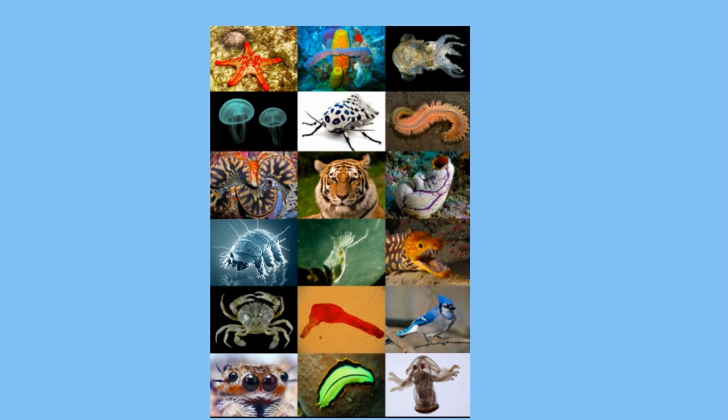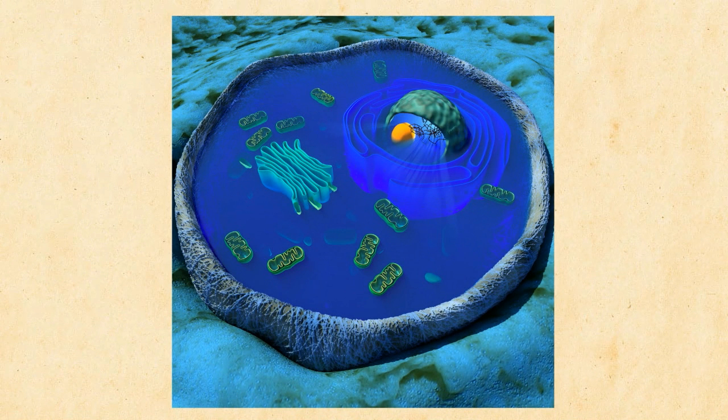There is a wide range of animals in this kingdom but all animals have these common traits. All animals are eukaryotes which means they all have a nucleus and membrane bound organelles.